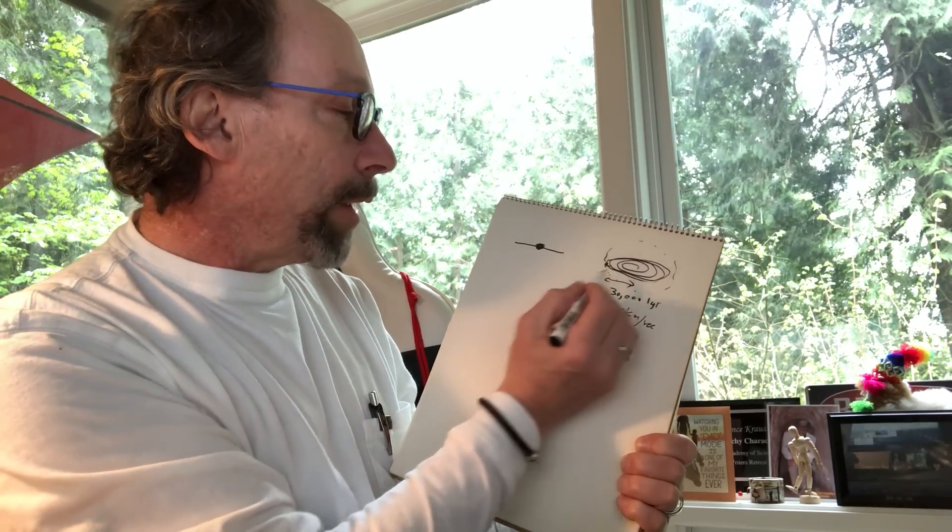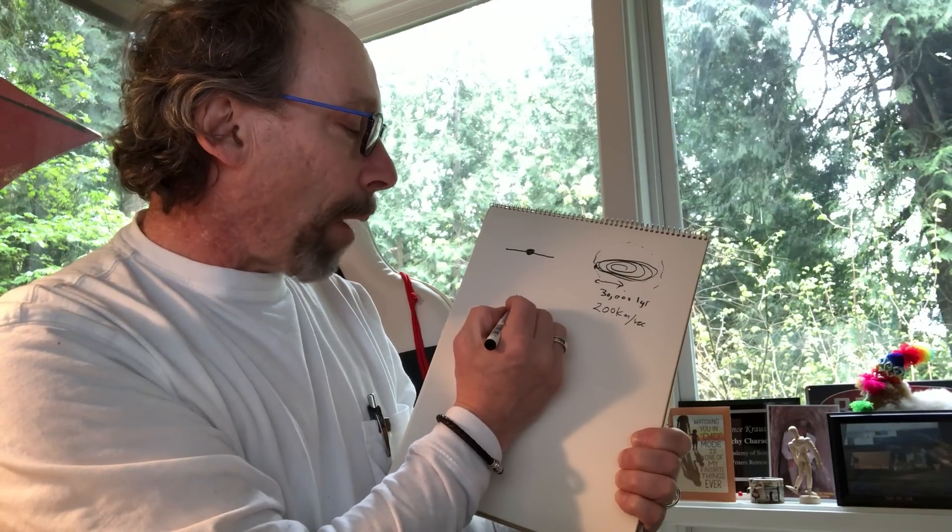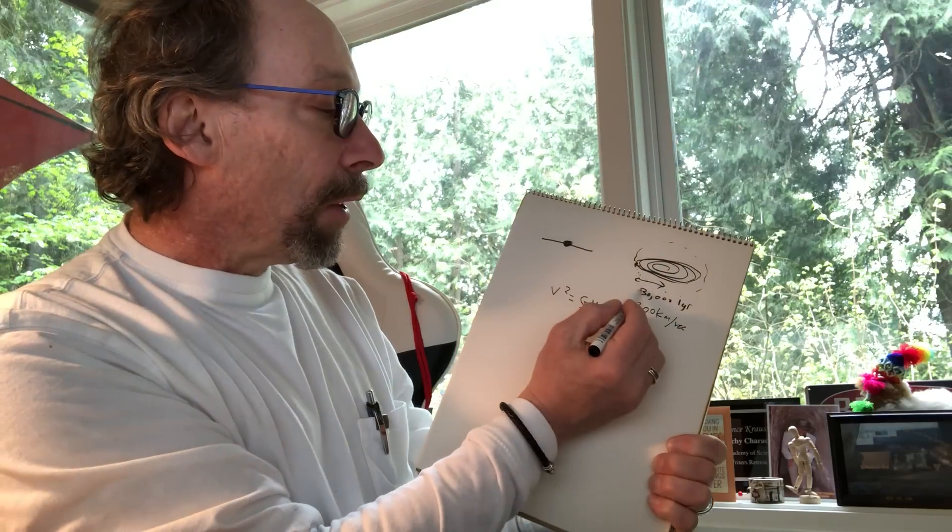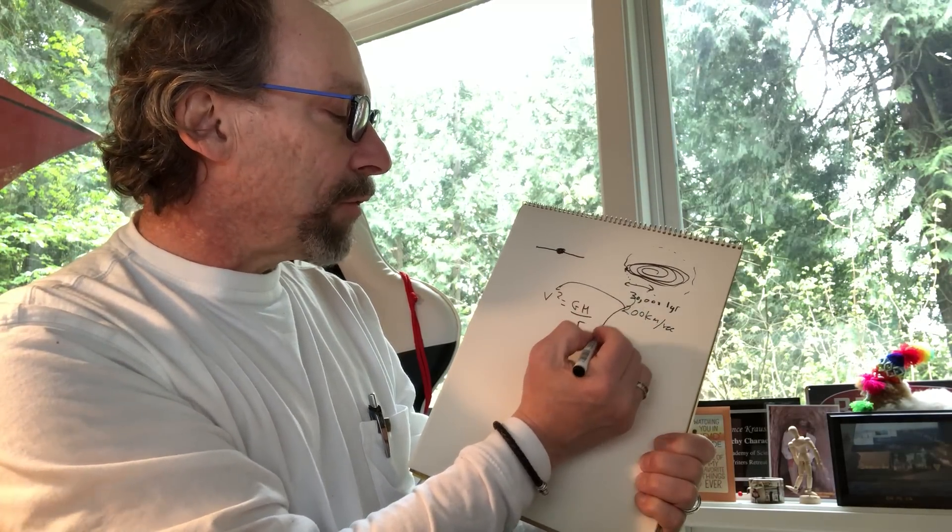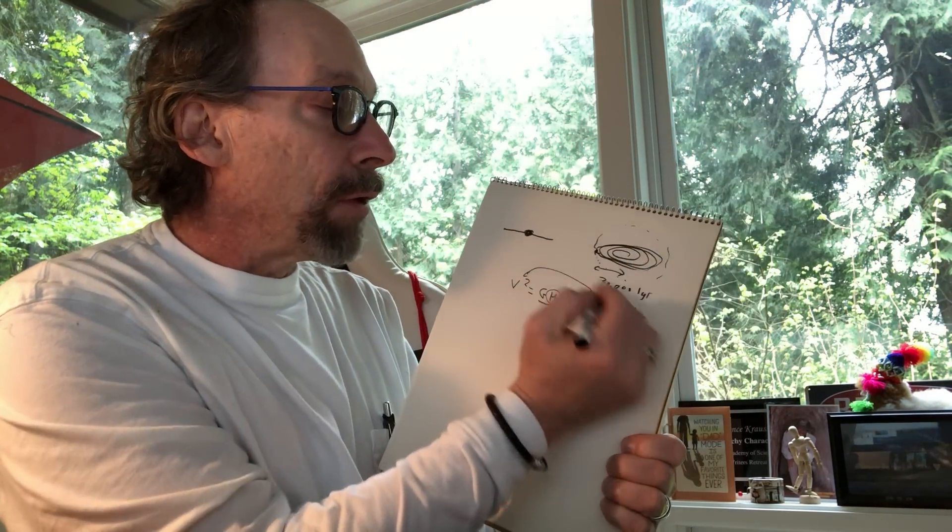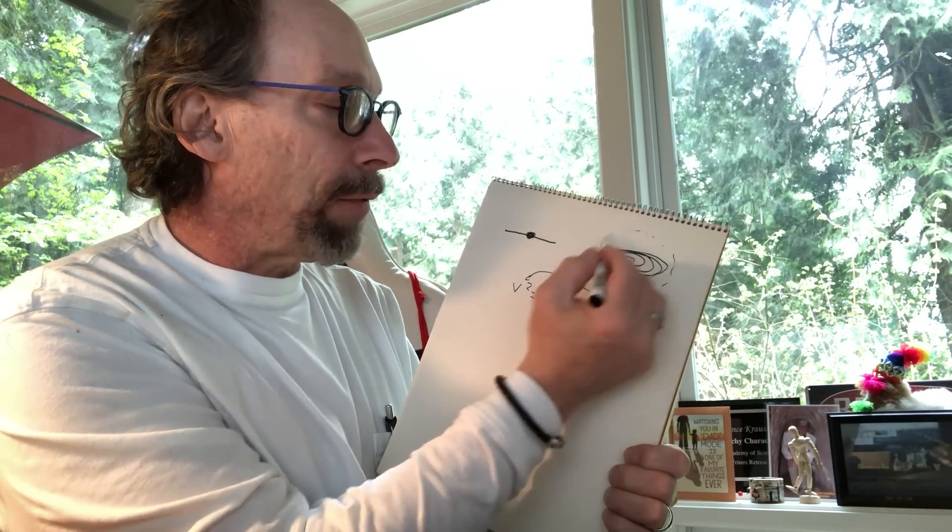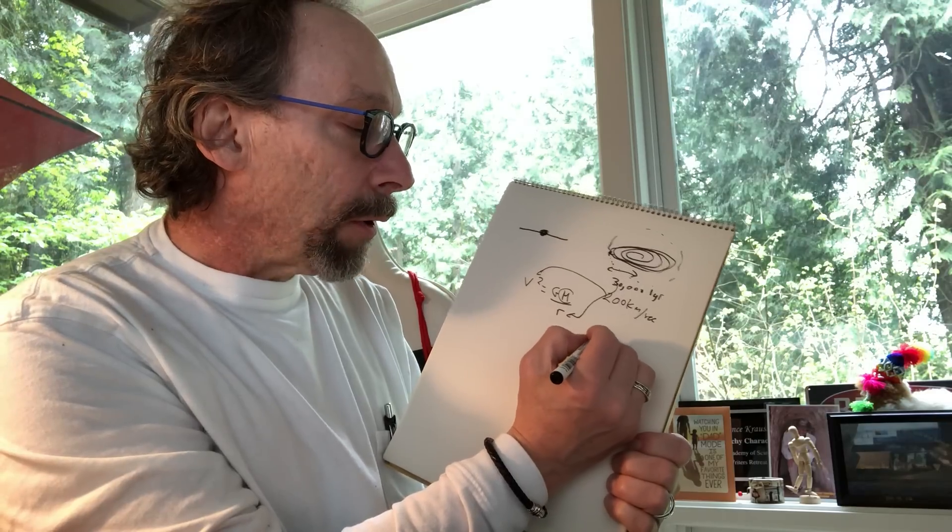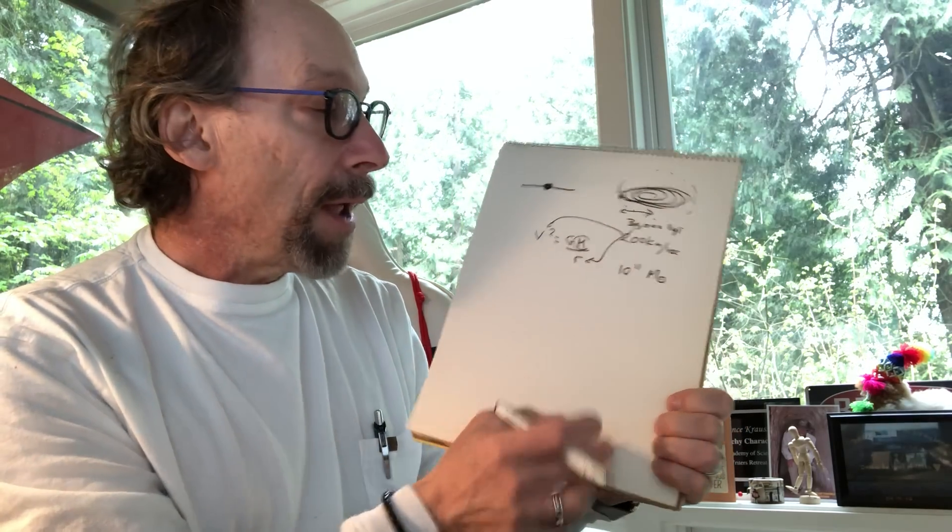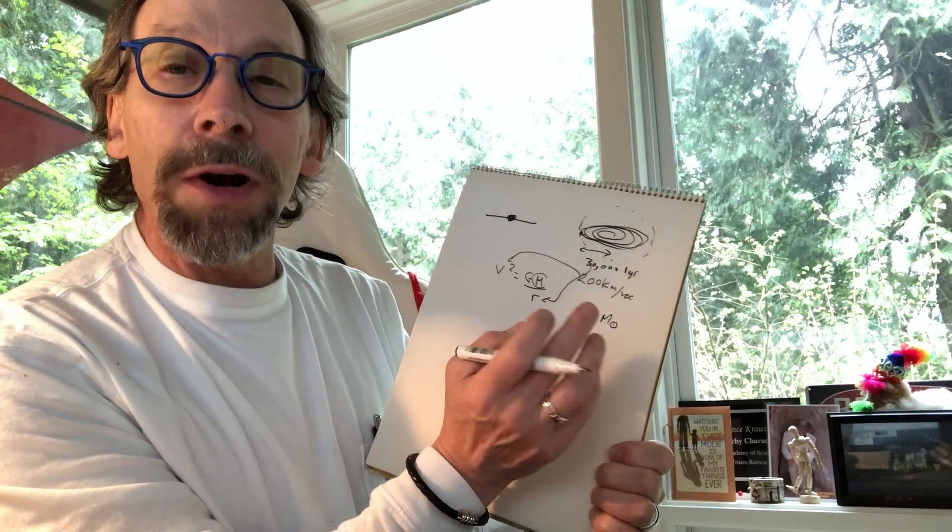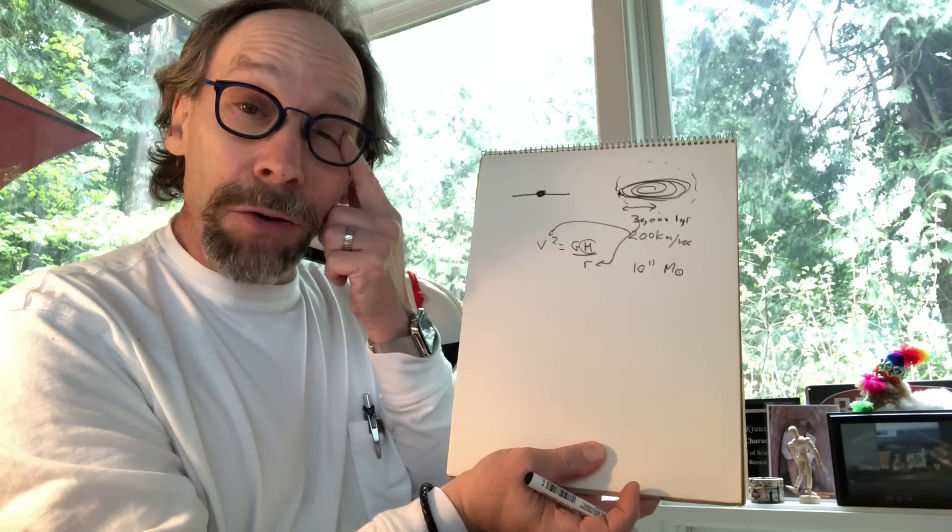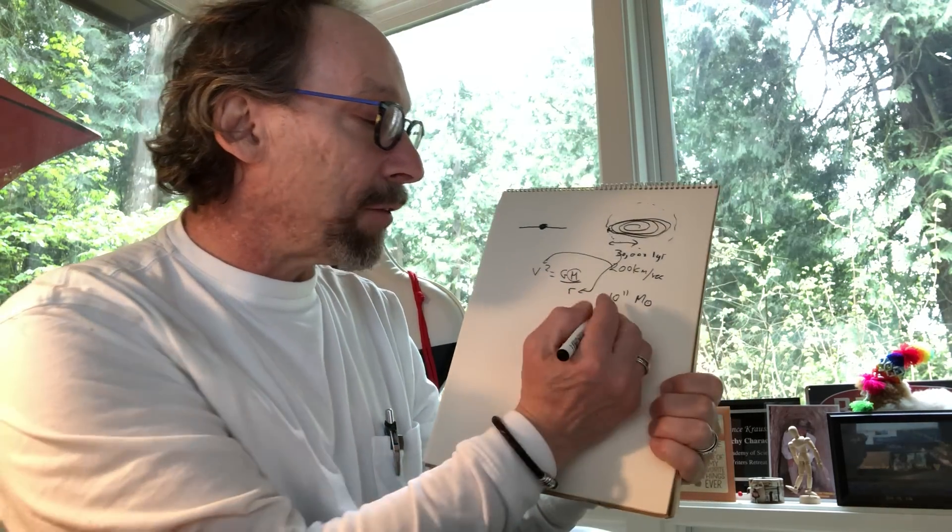We have the sun orbiting the galaxy and applying Newton's laws, we can calculate the total mass pulling the sun in. This gives you the velocity, this gives you its distance from the center, and applying the two together, you can work out the total mass of material pulling the sun around the galaxy. When you work it out, it's around 10 to the 11th times the mass of the sun, 100 billion times the mass of the sun. That works out beautifully because the number of stars in our galaxy is more or less 100 billion.